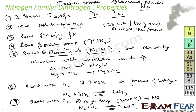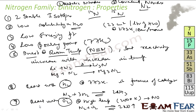So summarizing the properties of Dinitrogen: it is colorless, odorless gas with two stable isotopes, low solubility in water, and low freezing and boiling points. It is typically inert at low temperature because of its strong triple bond, but at high temperature it becomes reactive — reacting with metals, non-metals, Hydrogen, and Oxygen.